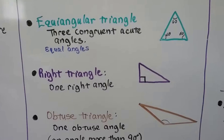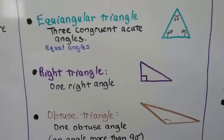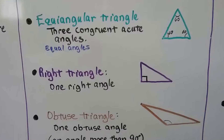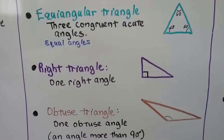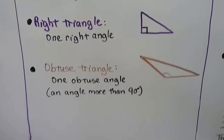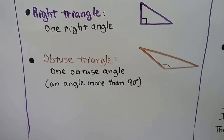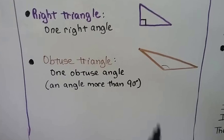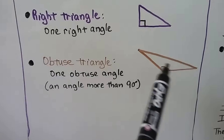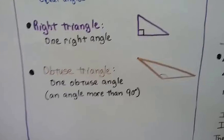A right triangle has one right angle — just one. It can't have two; it wouldn't be a triangle at all. An obtuse triangle has one obtuse angle, which is an angle more than 90 degrees, so it's got one big obtuse angle.